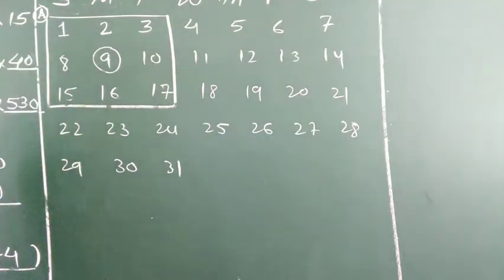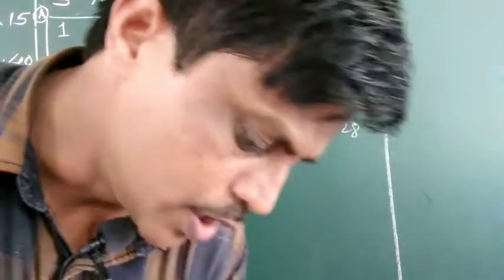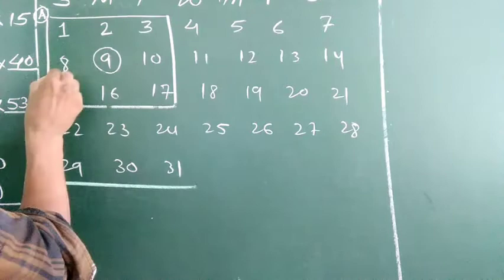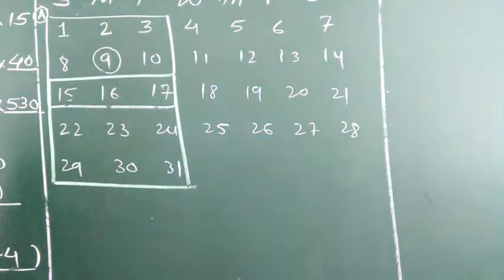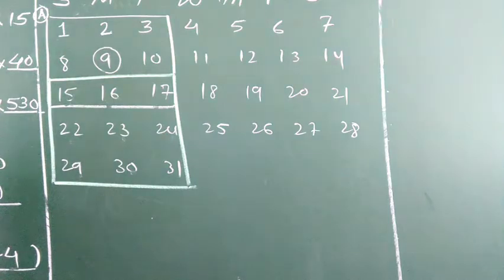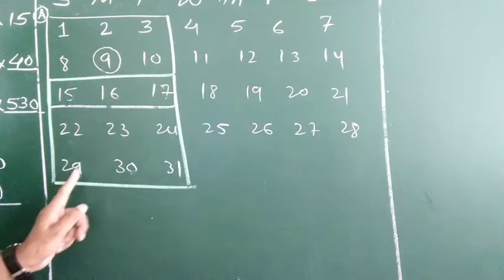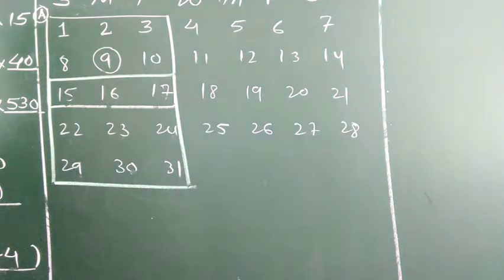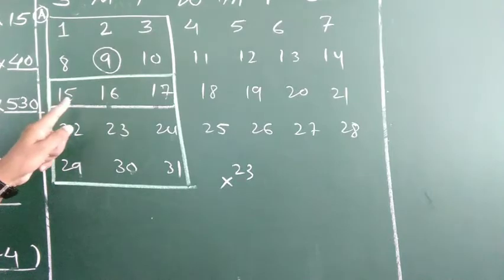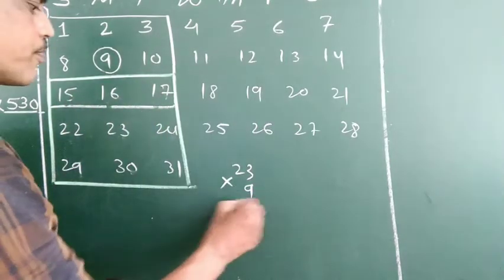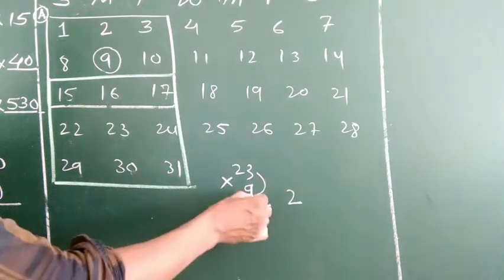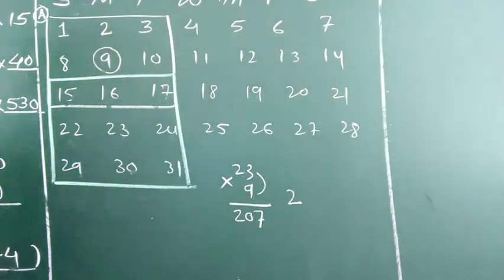This is example number A. Again we can make one more example — I will use a different color. In square B, the 9 numbers are: 15, 16, 17, 22, 23, 24, 28, 29, 31. Now you tell me which number is in between — the middle number is 23. How many numbers are there? 9. So 23 into 9: 23 times 9 is 207. Sum of all numbers in square B is 207.